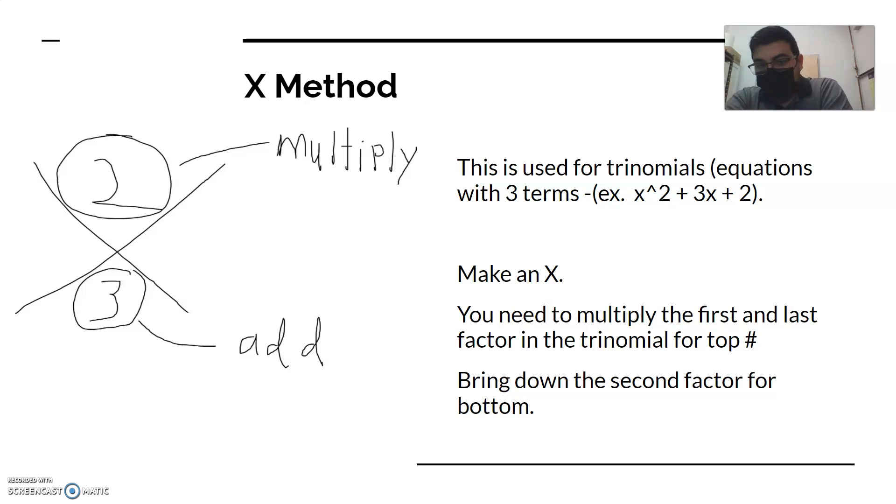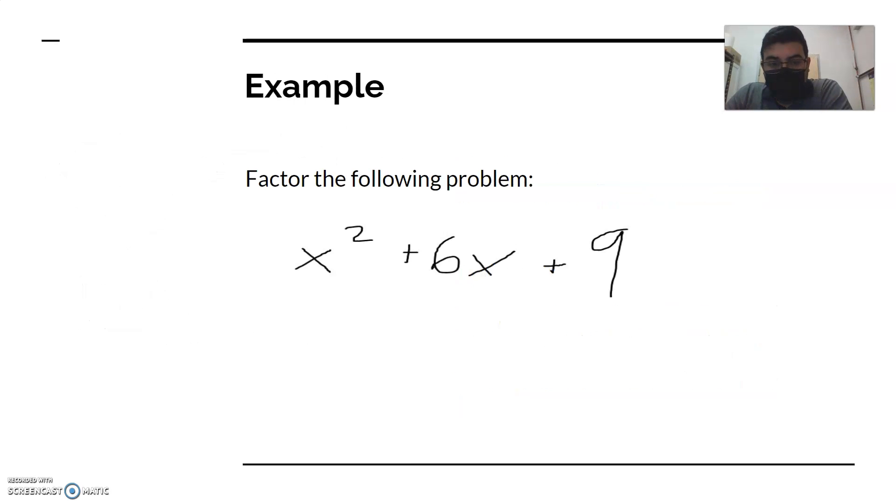Sometimes even trinomials, but this is where we factor with a perfect square. For the X method, you're making an X and the number on top you have to get by multiplying two numbers, and then those same two numbers have to add up to the bottom number.